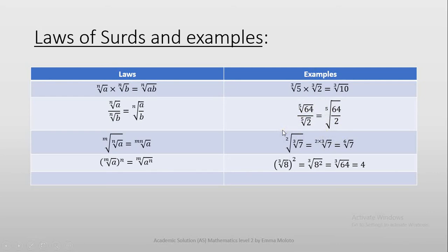The third law says the mth root of the nth root of a is equals to the mn root of a. Meaning, we multiply our roots, which is m multiplied by n — that's why we end up with the mn root of a. Checking the example, we have the square root of the cube root of 7.